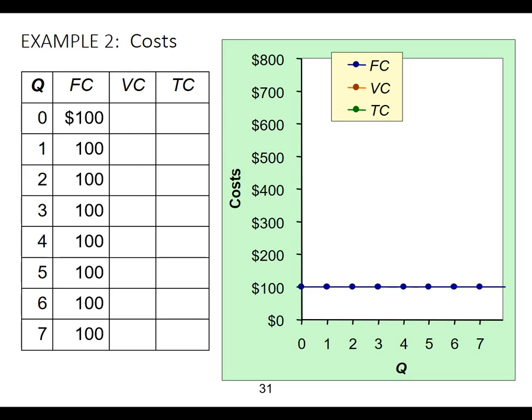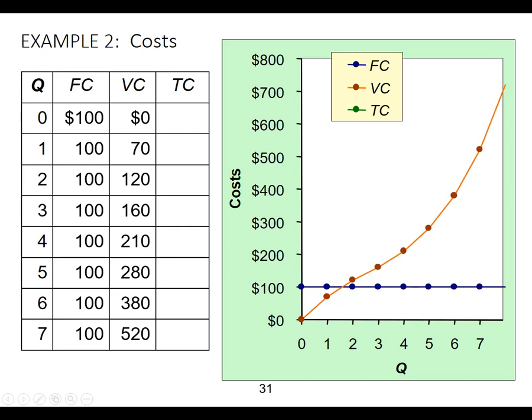It doesn't matter how much I produce — if I produce one or infinity, it's always going to be the same. Next, I've got variable costs. So here are the variable cost values. As we go up, we end up with more costs. The first unit is going to be at 70, which is slightly less than the fixed cost. The second unit is going to be above it, so it's going to increase because the more I produce, the more costs I'm going to have.